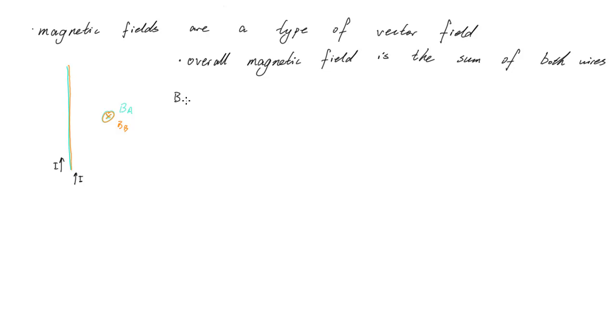Then the overall magnetic field Bt would be a sum of these two. We know how to find the magnetic field of a single current at some distance R away. B equals mu nought I divided by 2 pi R.